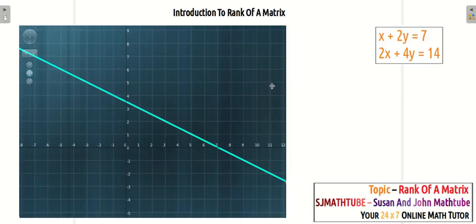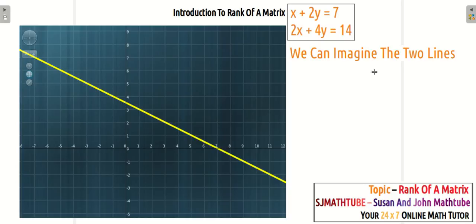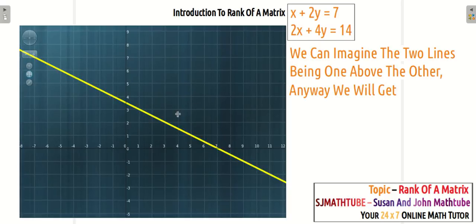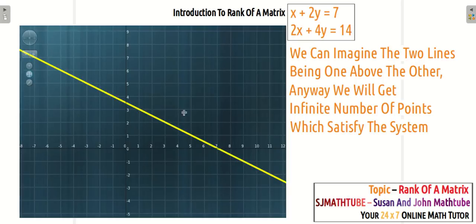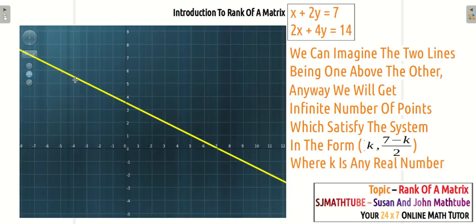Now let us go for the third case. I want you to focus on this system. You are able to see two equations, but when you plot them, you will be able to see only one graph. Actually, what happens is it is like one line above the other — both the equations are the same. So there will be an infinite number of points which can balance the system, and the solution will be infinite.